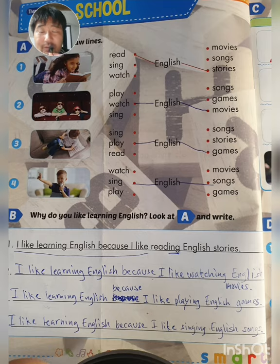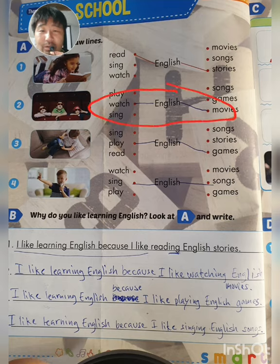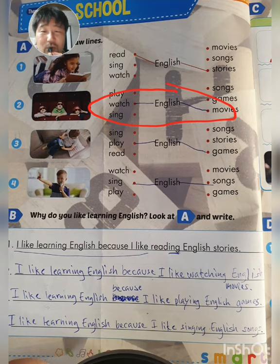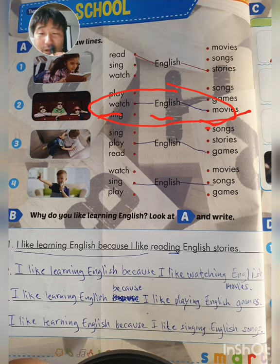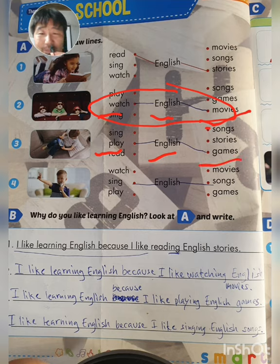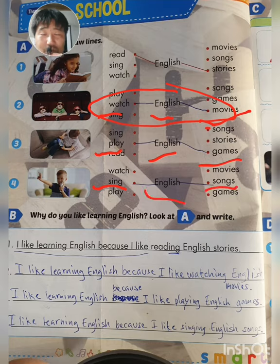You just ask the question - you have to write the question and then answer what you have written. Number one: I like learning English because I like watching English movies. Number three: I like learning English because I like playing English games. And the last one: I like learning English because I like singing English songs. And that is how you complete this exercise.